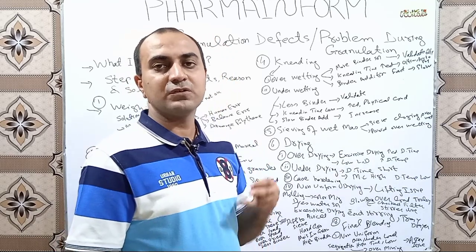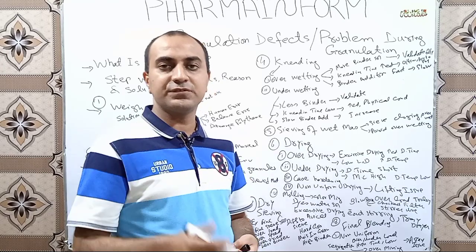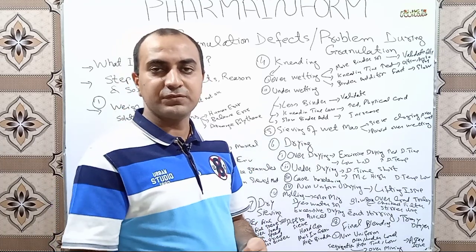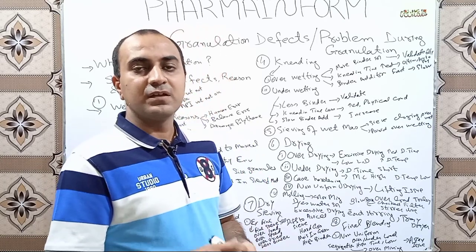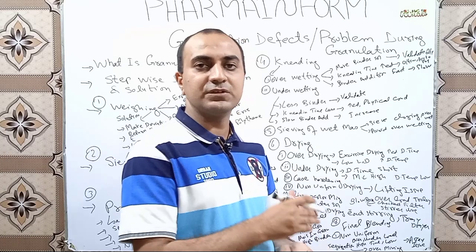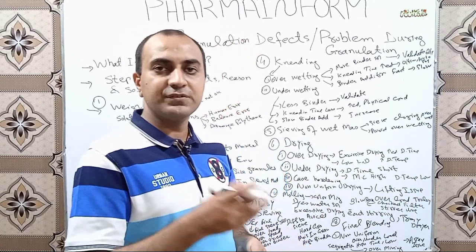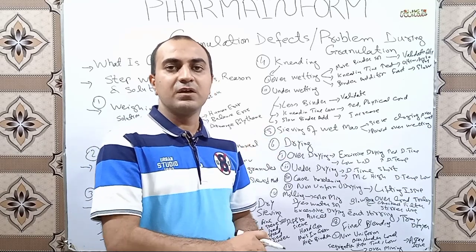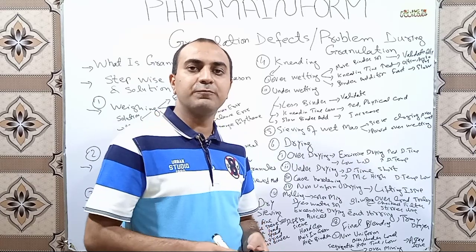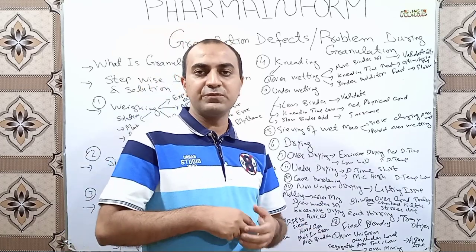In dry granulation, all steps like weighing, sieving, and pre-mixing are the same as wet granulation, except drying and wetting are not performed. The unique step is slugging. The defect which may occur during dry granulation is not achieving the recommended hardness of slugs — low hardness slugs produce more fines, which can cause weight variation in the subsequent compression step. Always compress slugs at the recommended hardness. In direct compression, the only observed defects are the same as discussed in the final blending step.